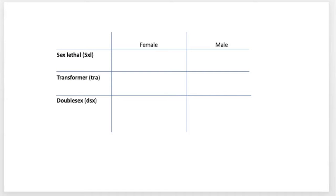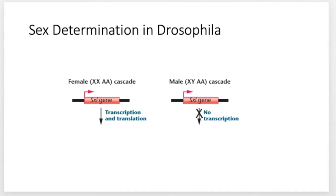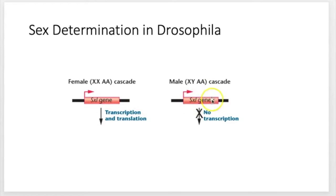So the three genes are: Sex lethal (SXL), transformer, and double sex. In Drosophila, the SXL gene either gets transcribed and translated, or it doesn't. In females, the SXL gene gets transcribed to mRNA and then translated into a protein. Whereas in males, the SXL gene does not get transcribed to mRNA, and so it can't get translated into a protein.